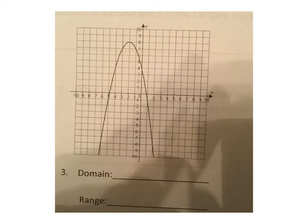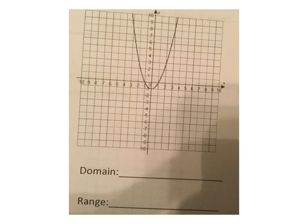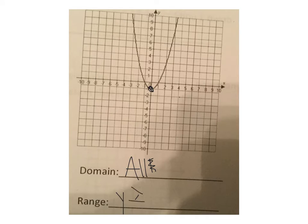Number 3: once you know the type of parabola, the domain is all reals — vertical parabolas always have all reals as their domain. The range is going to be y less than or equal to 8. For number 4, again you have an up-and-down parabola so your domain is all real numbers and your range is y greater than or equal to negative 1.